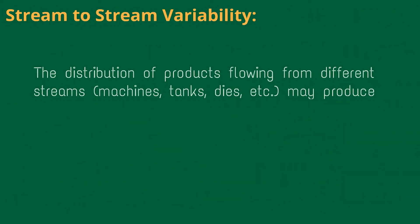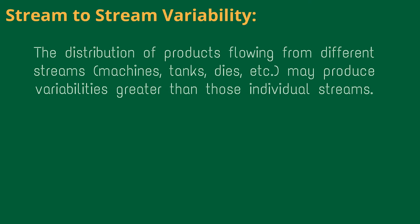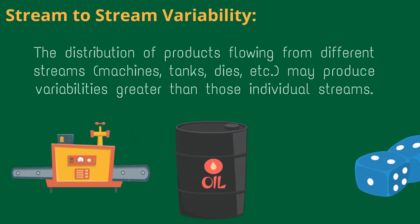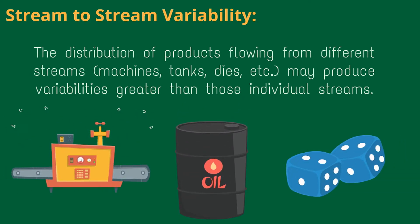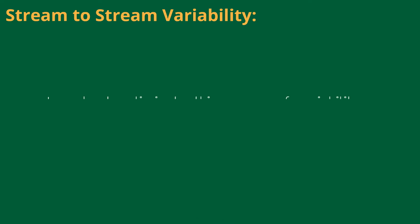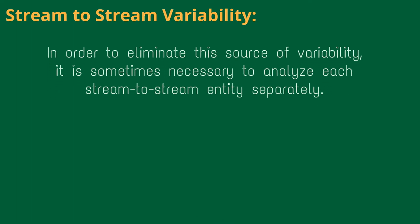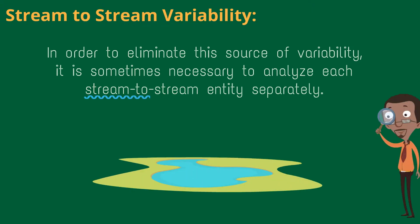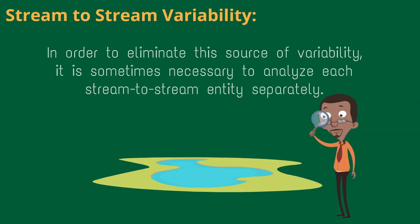Stream-to-stream variability refers to the distribution of products flowing from different streams — machines, tanks, dies, etc. — which may produce variabilities greater than those of individual streams. In order to eliminate this source of variability, it is sometimes necessary to analyze each stream-to-stream entity separately.